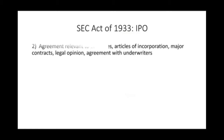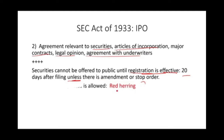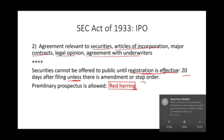The second part of the registration statement covers agreements relevant to the securities, such as articles of incorporation, major contracts, legal opinions, and agreements with underwriters. Securities cannot be offered to the public until the registration is effective — which is 20 days after filing — unless there's an amendment or a stop order from the SEC. Meanwhile, a 'red herring,' or preliminary prospectus, can show investors certain information before the SEC approves the full sale.